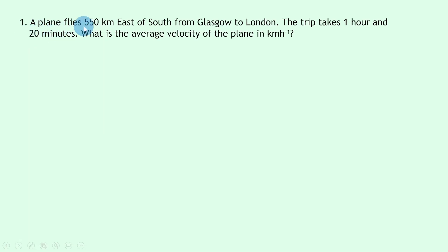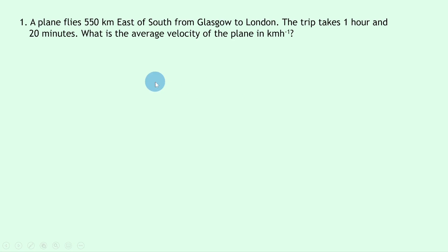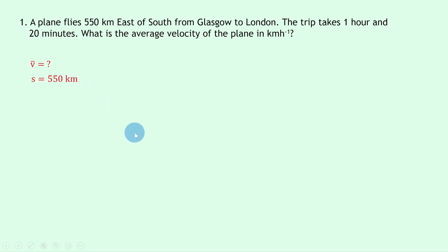So let's get started. Question one says a plane flies 550 kilometers east of south from Glasgow to London. The trip takes one hour and 20 minutes. What is the average velocity of the plane in kilometers per hour? Writing down what we know from the question: we're trying to find the average velocity v-bar, and we know the displacement s is 550 kilometers.